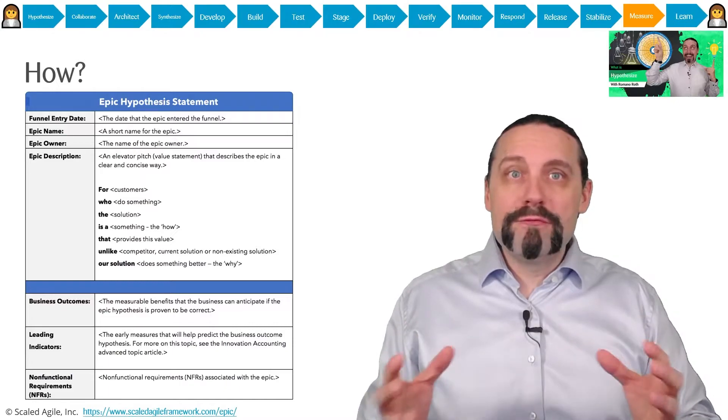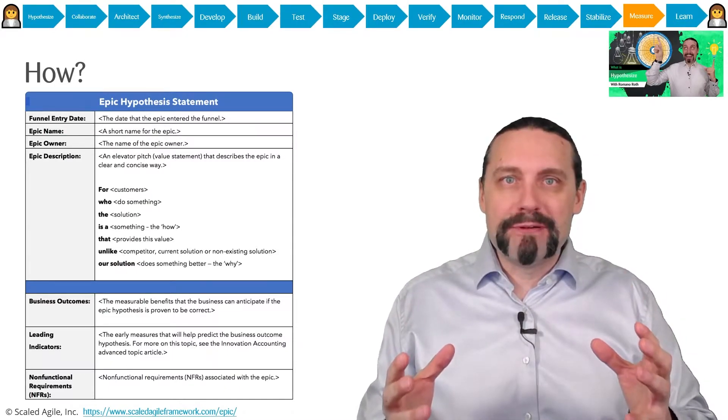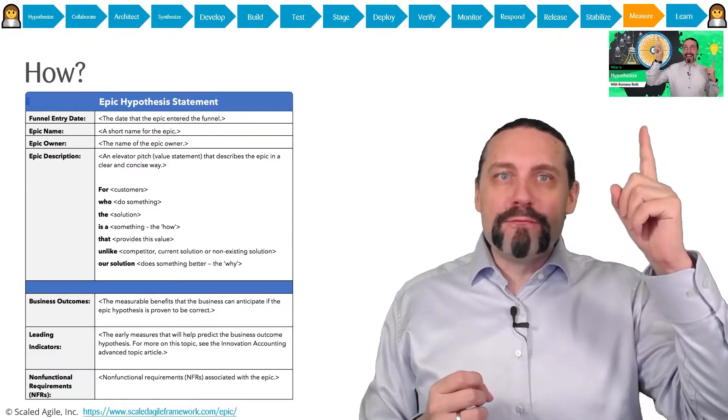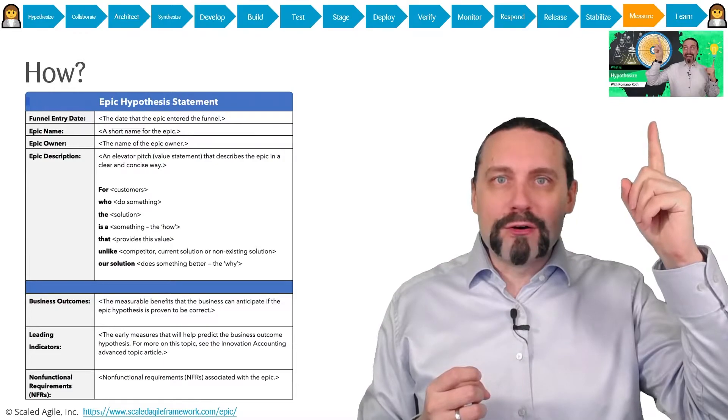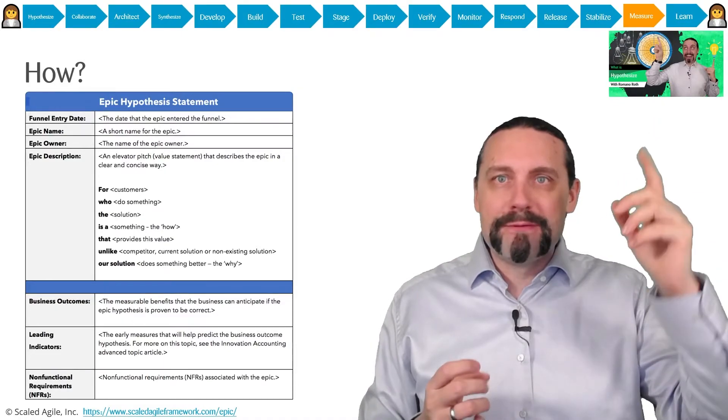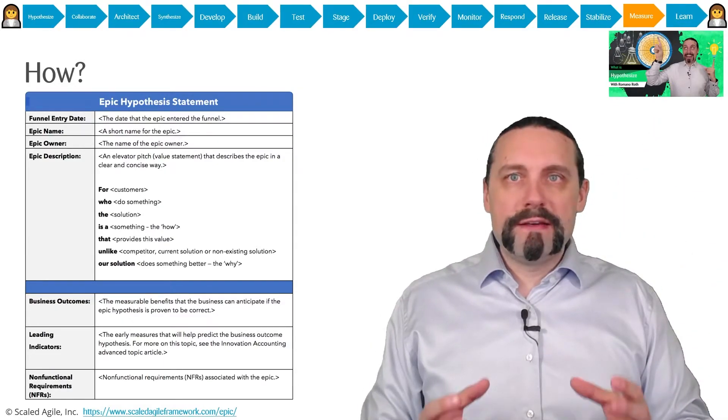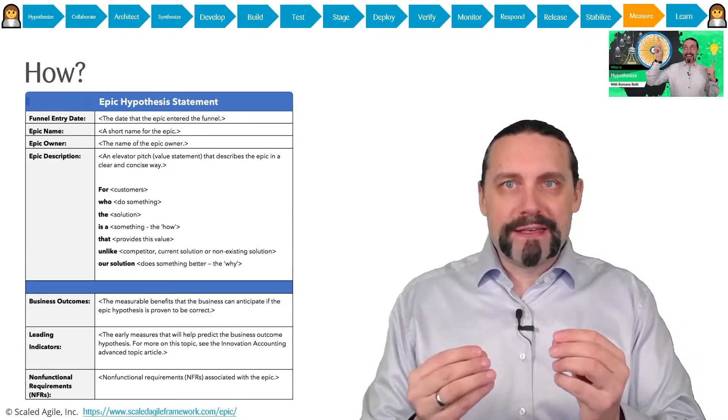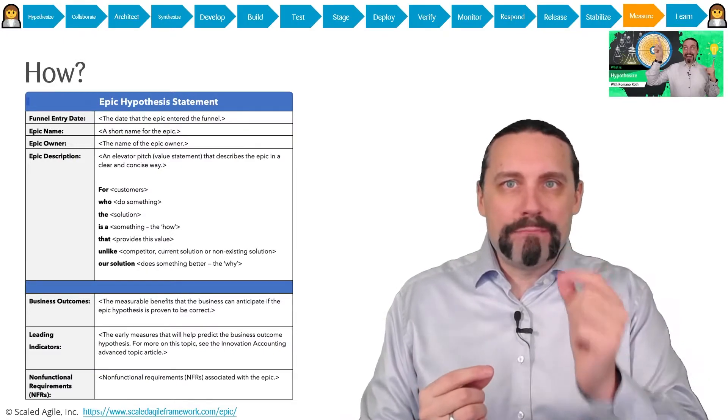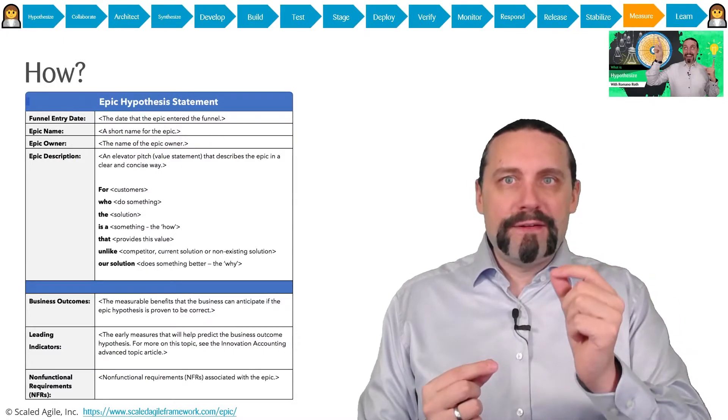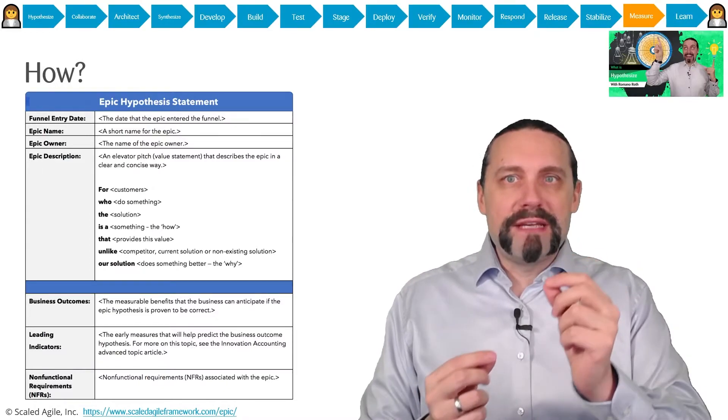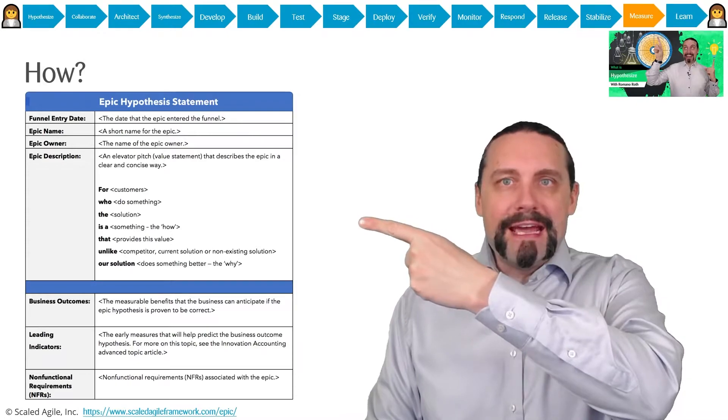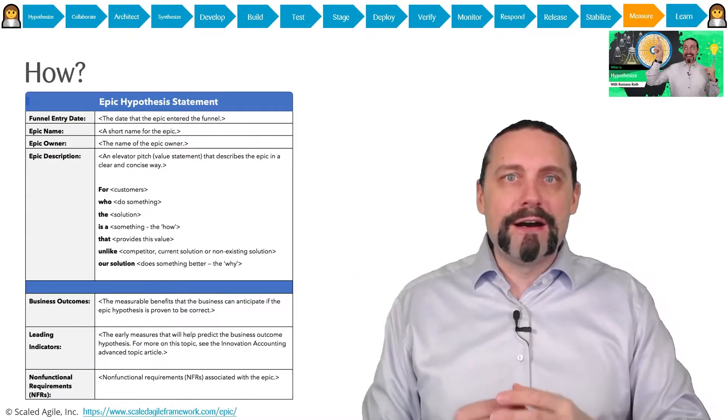Perhaps you remember back in the hypothesis step we talked about epics. You can watch my video up here about the whole hypothesis step. An epic is a significant initiative and behind such an epic there is always a hypothesis we need to identify. And we use for that the epic hypothesis statement which you can see up here.